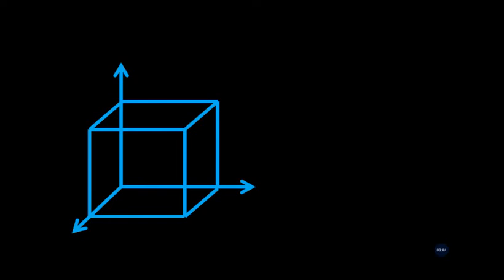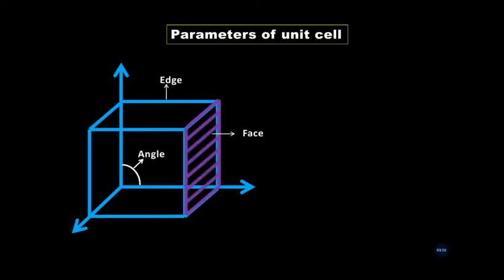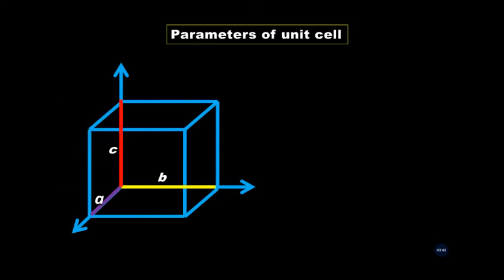The unit cell is characterized and defined by some parameters, that is axes and angles. What are edges? The intersection of two adjacent planes of the crystal lattice are called edges. These three edges are denoted by A, B, and C. This represents the dimension of the unit cell along three axes. These edges may or may not be mutually perpendicular.